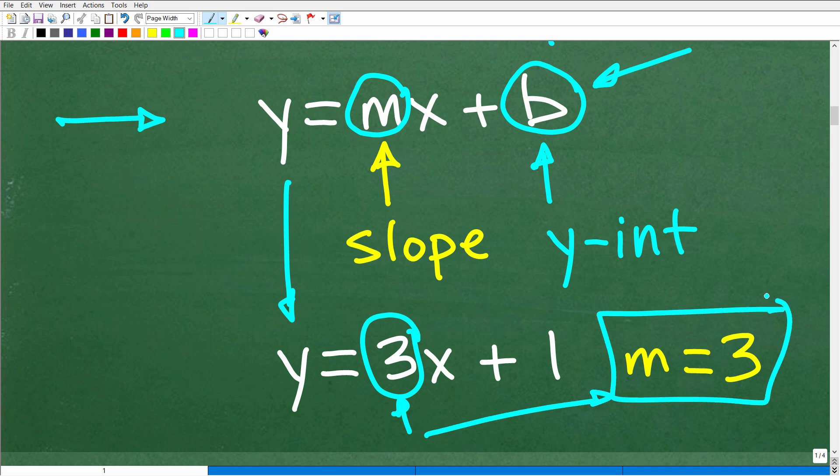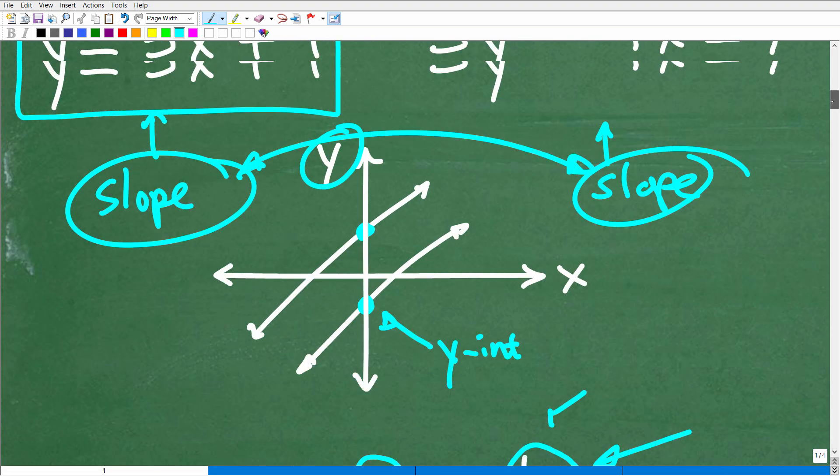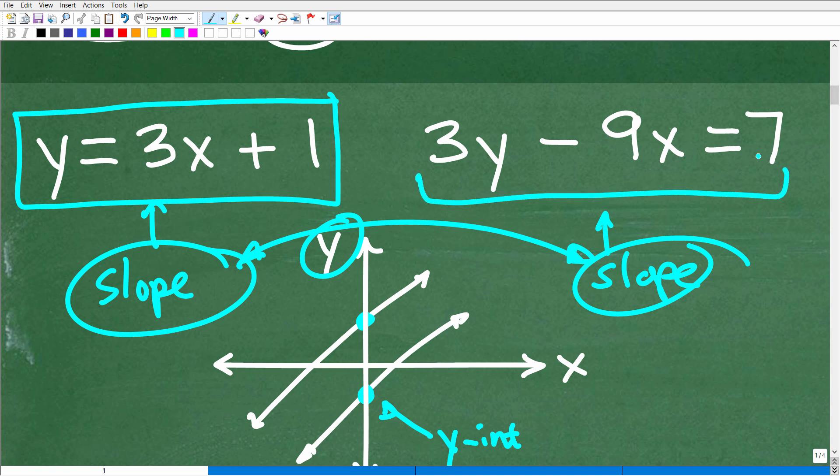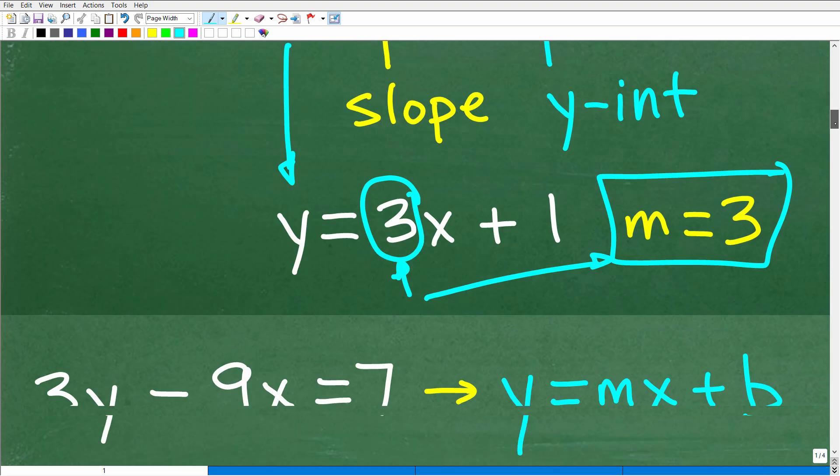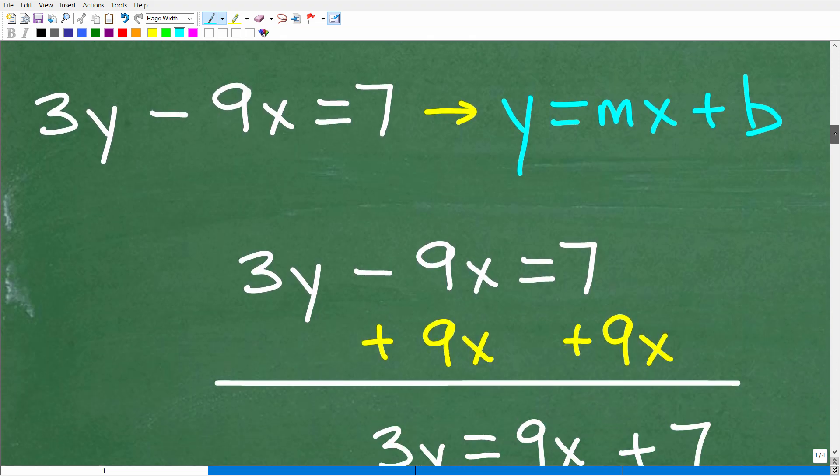So you have to have just a y, not a number in front of y, like 5y, anything like that. Y by itself equals then a number in front of x plus or minus another number. So you can see that this linear equation is perfectly in y equals mx plus b form, slope-intercept form. So all I have to do is look at that number in front of x, and that is my slope. So in this line, the slope is 3. That is so, so easy, right?